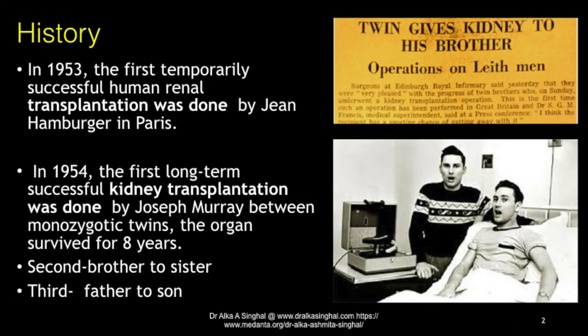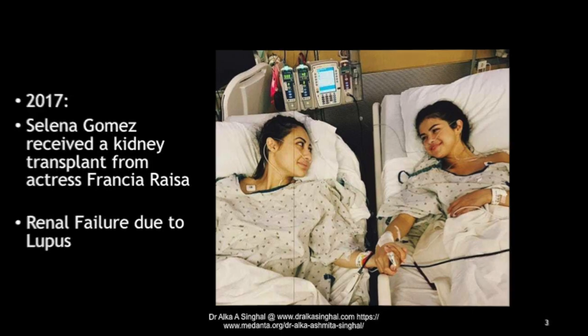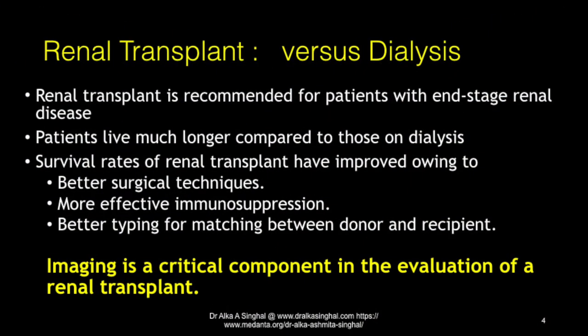History of renal transplant. Renal transplant has come a long way — from the first transplant between two monozygotic twins, to between brother and sister, father and son, and now between two friends. Treatment for end-stage renal disease is chronic dialysis or transplant. Advantages of transplant include better survival and better quality of life, owing to better surgical techniques, better immunosuppression, and better donor-recipient matching. Imaging is a crucial component in the evaluation of renal transplant.